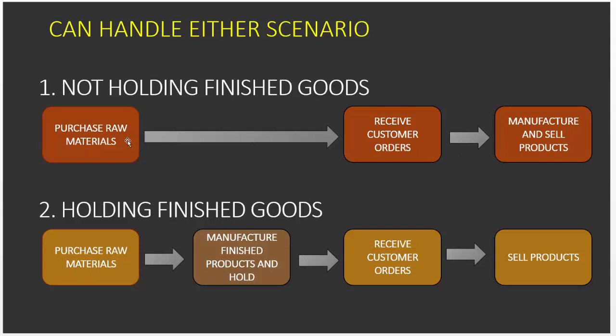For example, if you're running a smoothie or juice company, you purchase raw materials — fruits or vegetables — and wait for customers to place orders. You immediately create the finished product, whether a juice, smoothie, or shake, and sell it right there. That is the scenario where you don't hold finished goods.